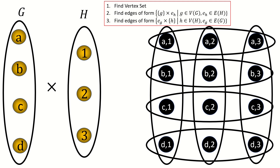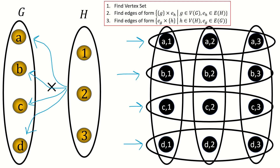Like the graph Cartesian product, we can choose to view the hypergraph Cartesian product as an operation that replaces each vertex in one of the factors with a copy of the other factor, and then produces edges between vertices in different copies according to the edges present in the other factor.